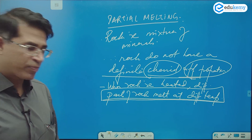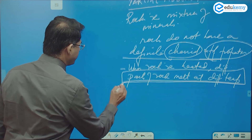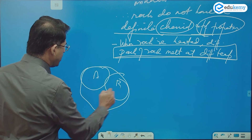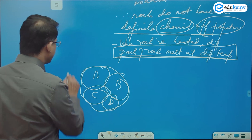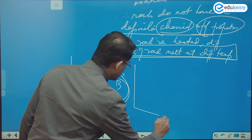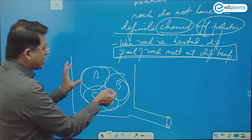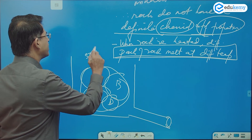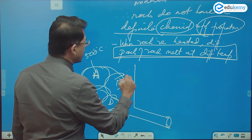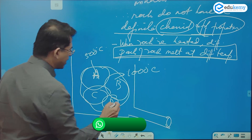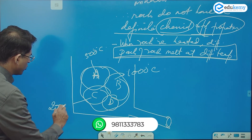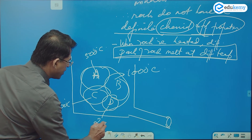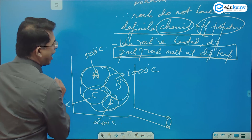Have you heard of fractional crystallization or fractional distillation? If you have a mixture — say a substance which has components A, B, C, and D — and you take a beaker and melt this rock, part A has a melting point of 500°C, part B has a melting point of 1000°C, part C has a melting point of 2000°C.